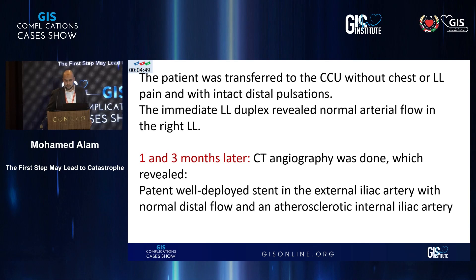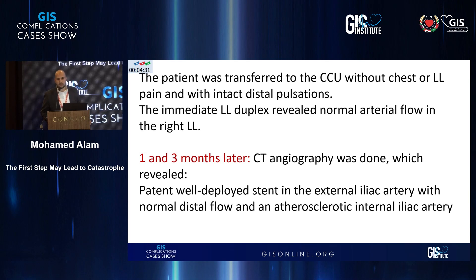The patient was transferred to the CCU without any chest or lower limb pain and with intact distal pulsations. Immediate lower limb duplex at the CCU revealed normal arterial flow in the right lower limb with intact pulsations. We planned IVUS the next day to assess stent optimization, but the patient refused further interventions. One-month and three-month CT angiography revealed a patent, well-deployed stent in the external iliac artery with normal distal flow and atherosclerotic internal iliac artery.